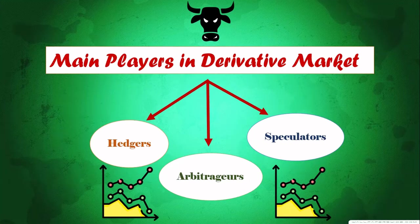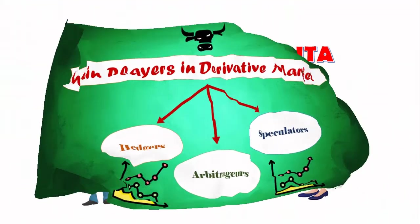Before starting the lecture, let me inform you that this is video number 100 in my channel, so I'm happy for that. Our today's topic is main players in the derivative market. As you can see, there are three main players: hedgers, arbitrageurs, and speculators. Let's know them in detail with examples.